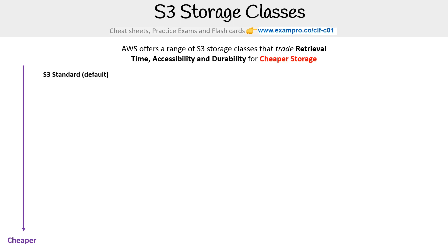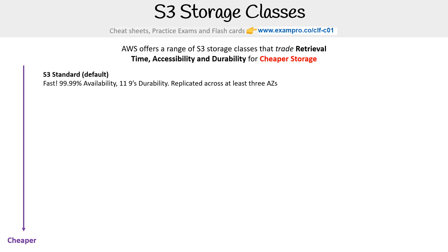When you put something in S3, it's going to go into the Standard tier — the default. This is incredibly fast, it has 99.99% availability, eleven nines durability, and it's replicated across three AZs. It's not actually expensive, but it is expensive at scale when you can better optimize it with the other tiers.